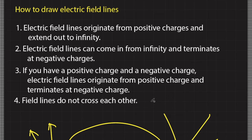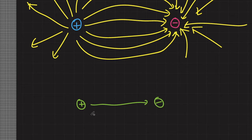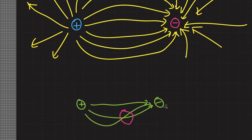Rule number four: field lines do not cross each other. Looking at our figure, notice that no electric field line crosses another. We should not draw overlapping field lines. If two lines appear to cross, we could calculate the vector sum of those electric fields, which would reduce them to one equivalent electric field. So it is nonsense to draw overlapping electric field lines.